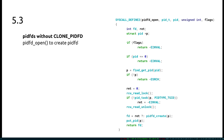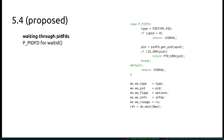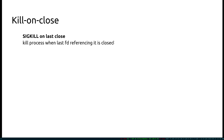And in 5.4, Linus pulled it from me, so we have that in now — you can now wait on processes through PIDFDs. waitid has gained a new flag, P_PIDFD; you pass it a PIDFD instead of a PID, and then it waits on the PIDFD, which I think is pretty neat.